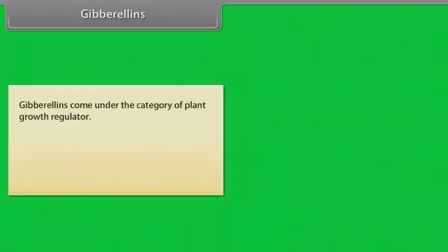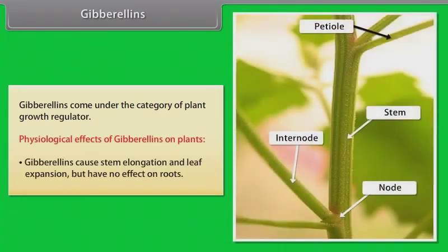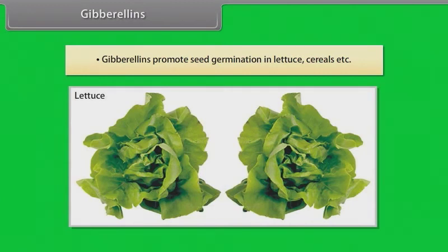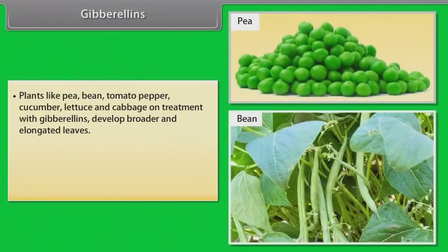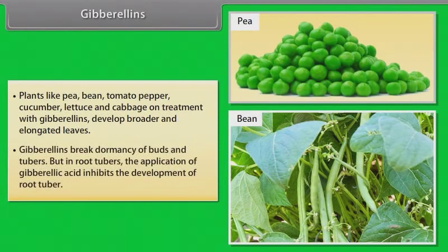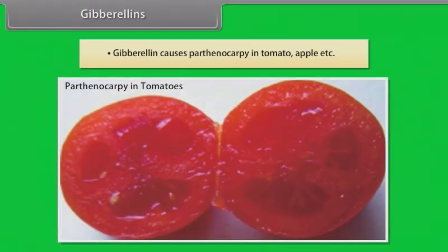Gibberellins. Gibberellins come under the category of plant growth regulator. Physiological effects of gibberellins on plants: gibberellins cause stem elongation and leaf expansion but have no effect on roots. Gibberellins promote seed germination in lettuce, cereals etc. Plants like pea, bean, tomato, pepper, cucumber, lettuce and cabbage on treatment with gibberellins develop broader and elongated leaves. Gibberellins break dormancy of buds in tubers. But in root tubers, the application of gibberellic acid inhibits the development of root tuber. Gibberellins cause parthenocarpy in tomato, apple etc.